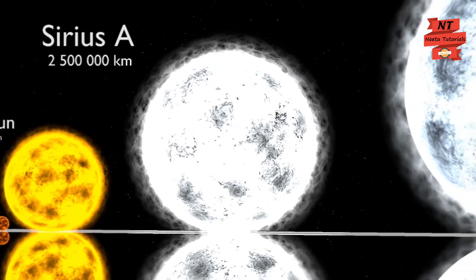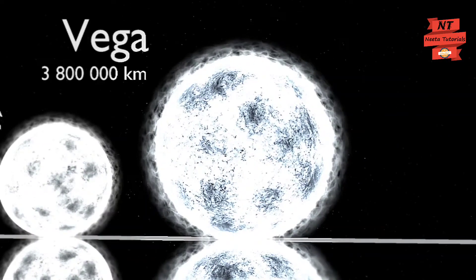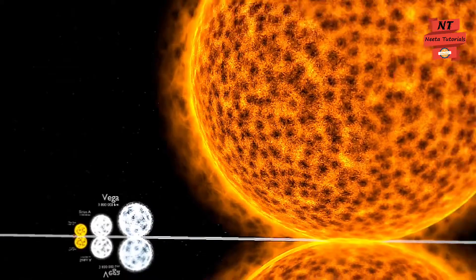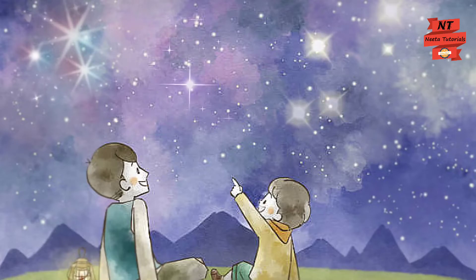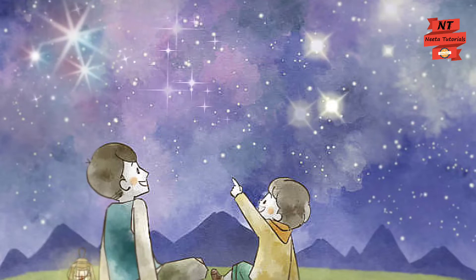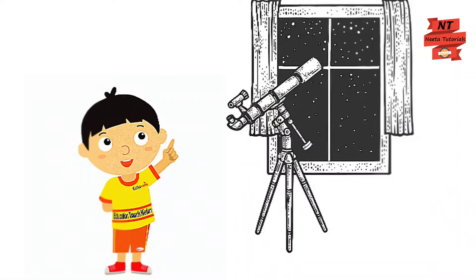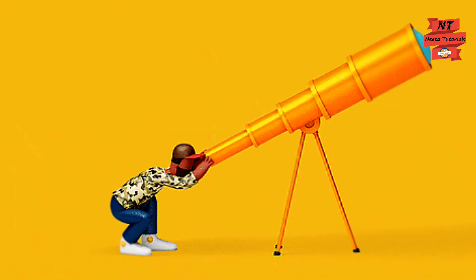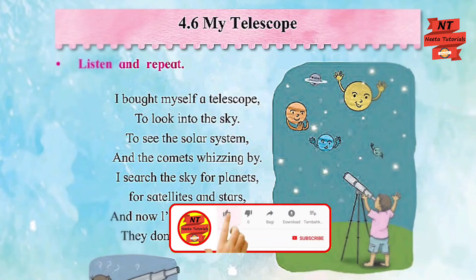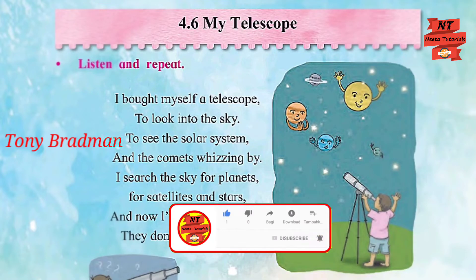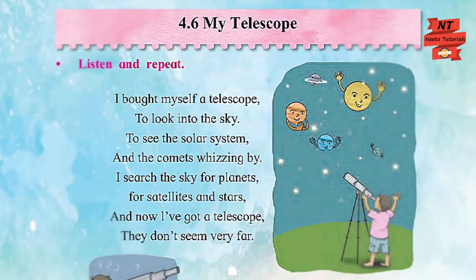But children, some stars are even bigger than our Sun. We see them so small because they are very far away from us. Are you curious to watch these shining bodies closely? Let's buy a telescope! A telescope is a tube-like instrument used to see faraway objects.